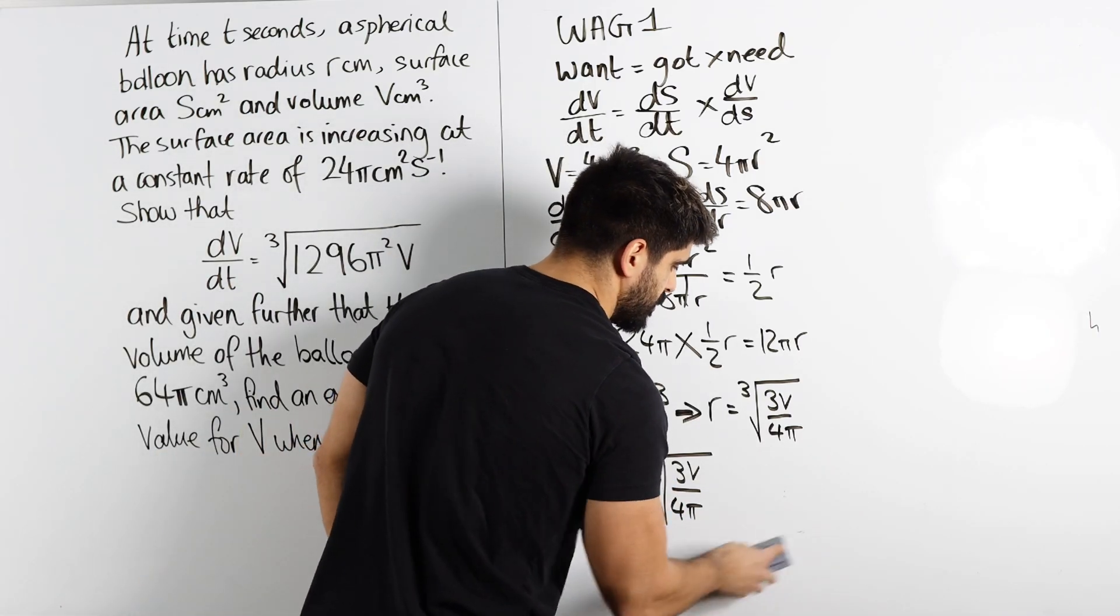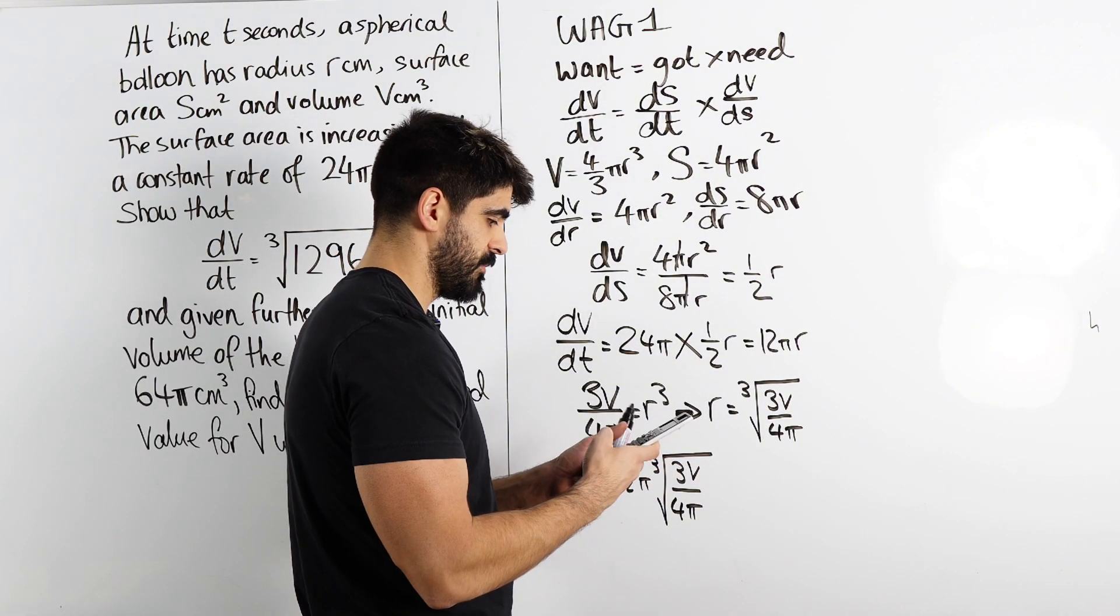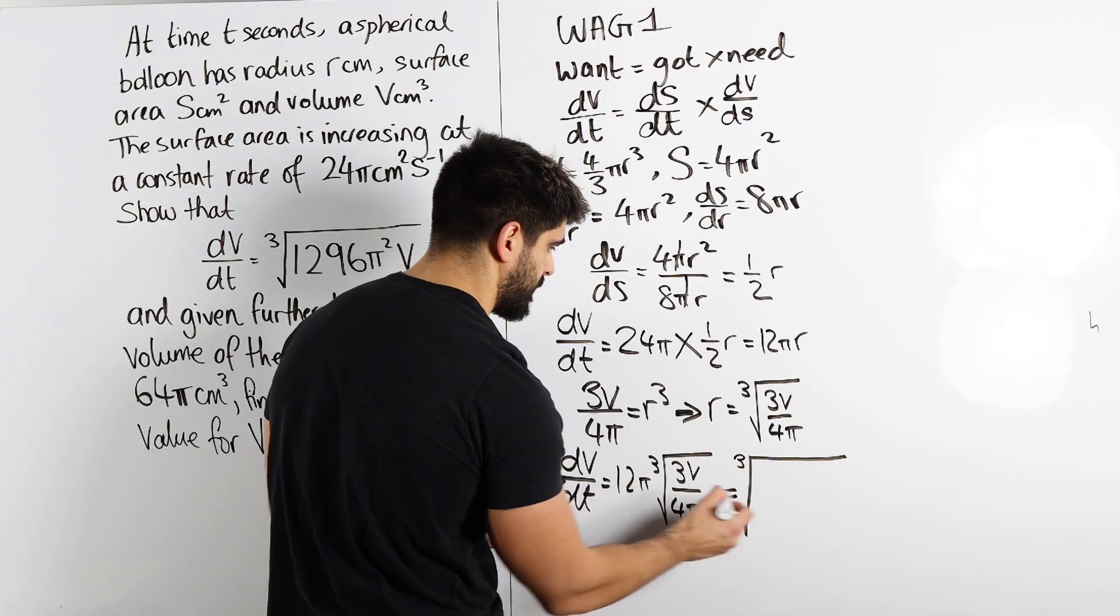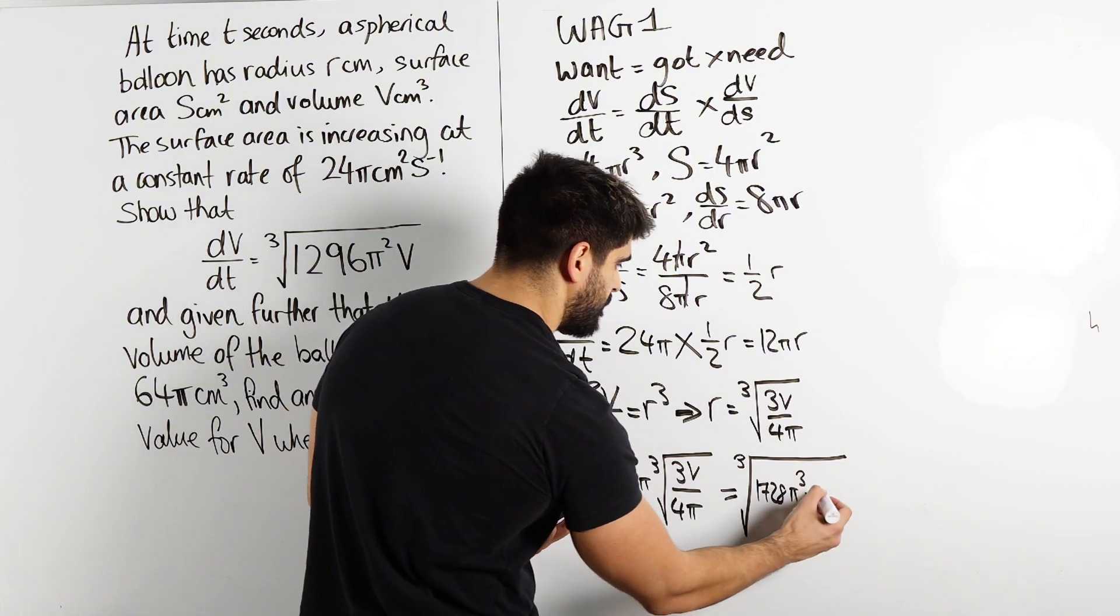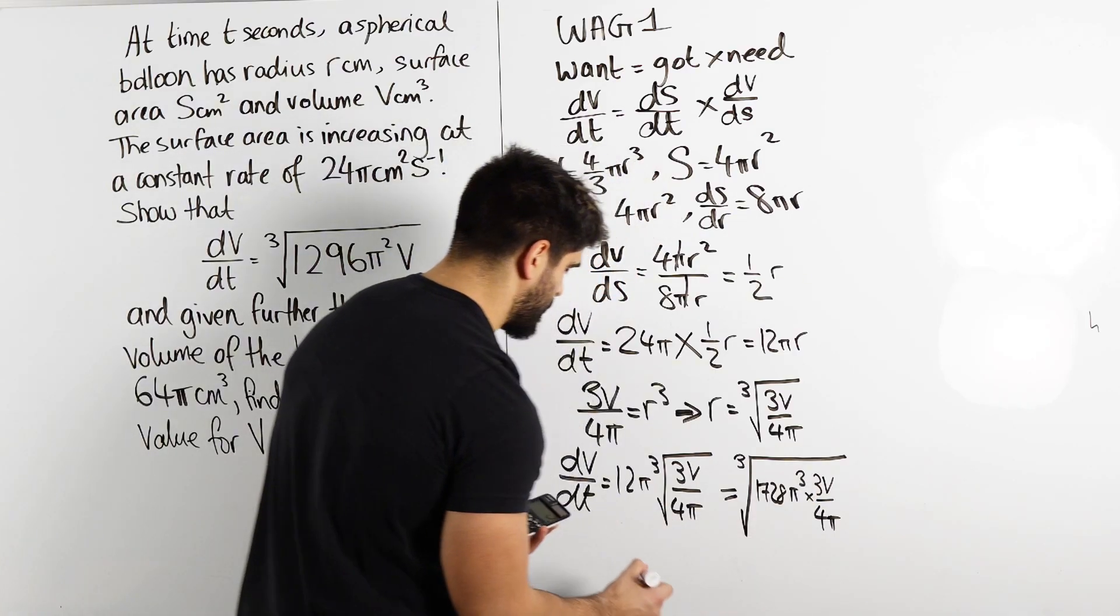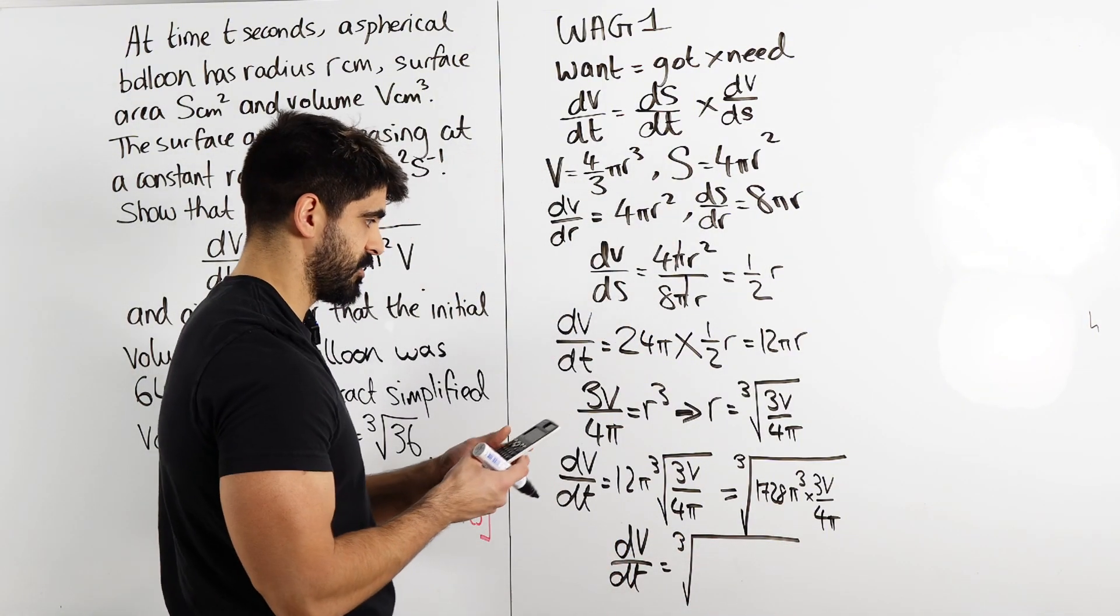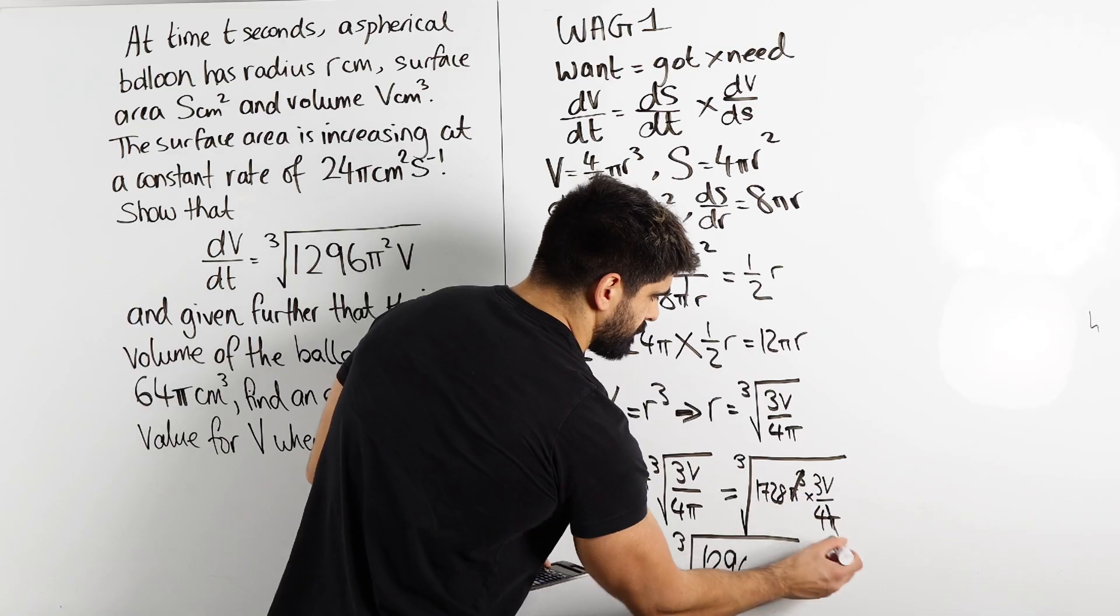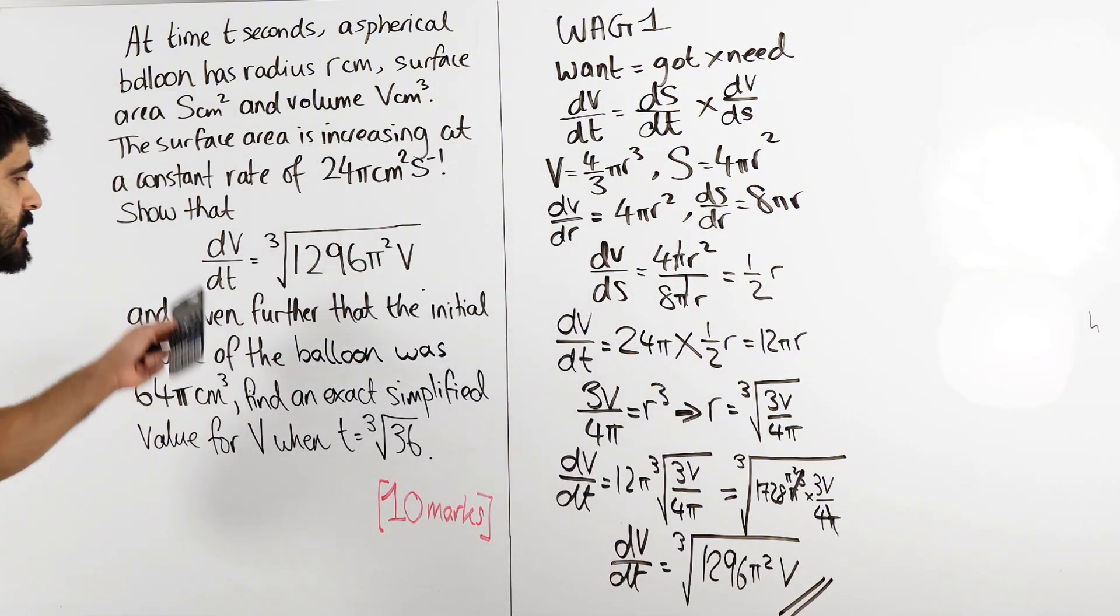So over here, what I'm going to do is I am going to cube 12 cubed, which is 1728. So I get the cube root of 1728, cube the π, which is π cubed, and I'm going to multiply that by what's left, 3v over 4π, and that's it. 1728, if I times that by 3 quarters, hopefully I get the final answer. So I'm going to get the cube root of 1728 times 0.75, which is 1296. Nice. π cubed cancels the π to make π squared, and then we have our v. And that is the show that for part a.